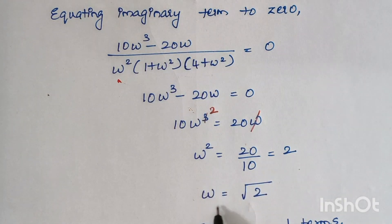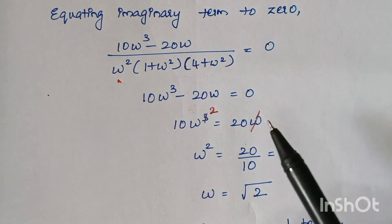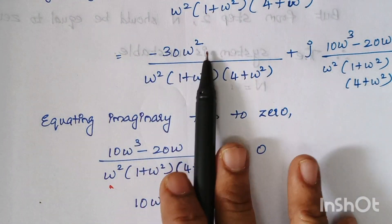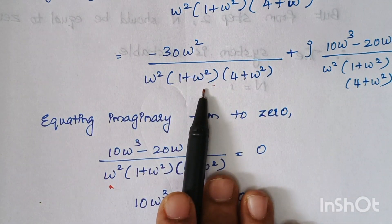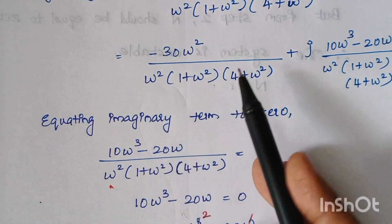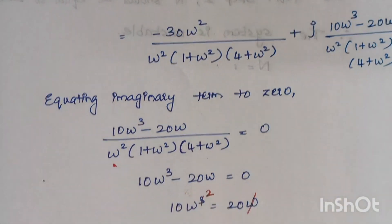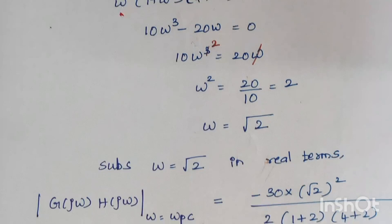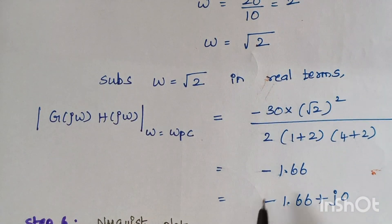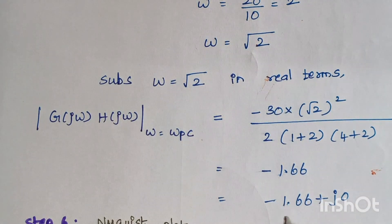Substituting omega equals square root of 2 into the real part: minus 30 omega squared divided by omega squared times one plus omega squared times four plus omega squared. After substituting and solving, we get minus 1.66, which can be written as minus 1.66 plus j0.